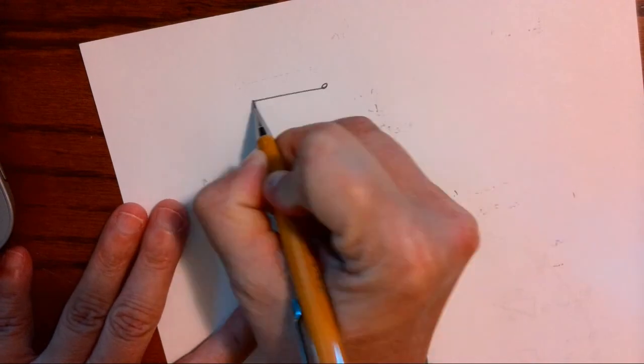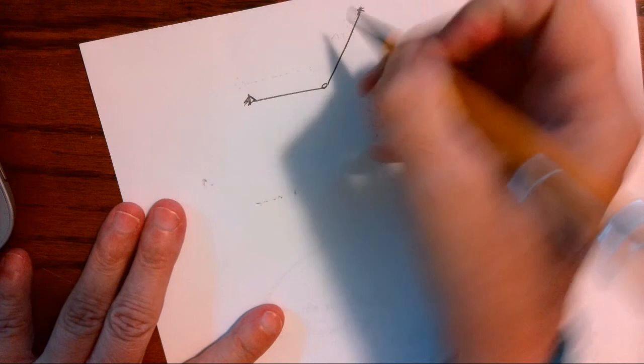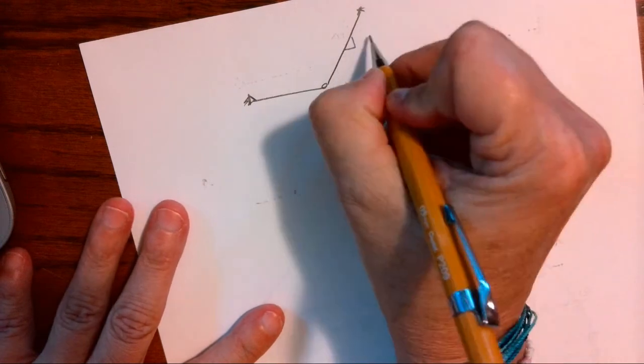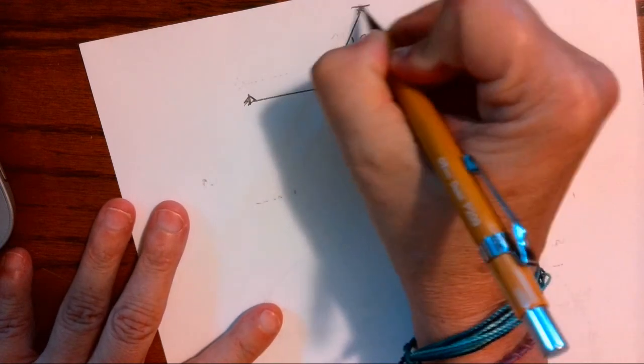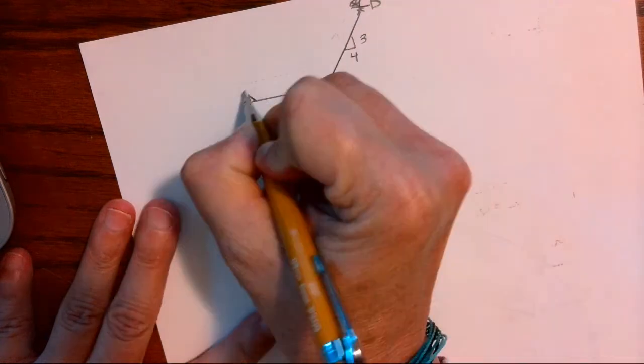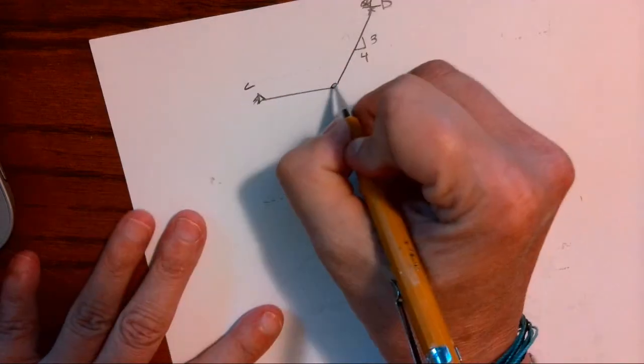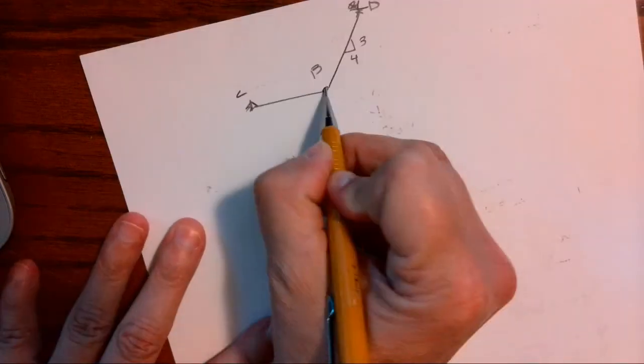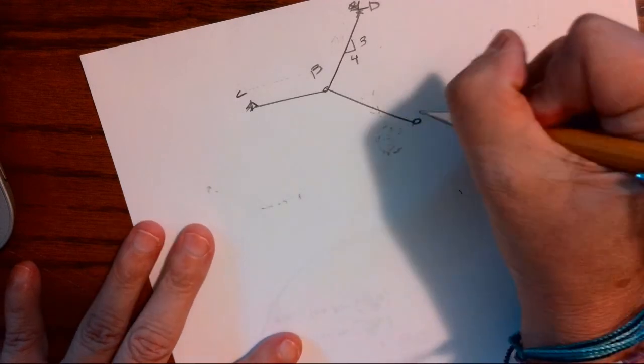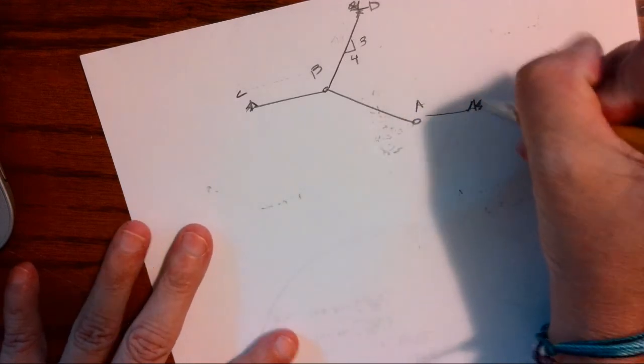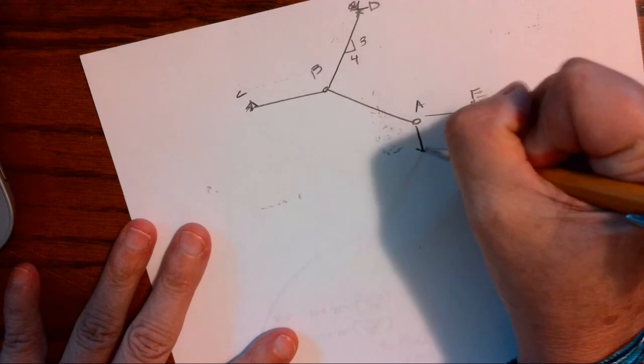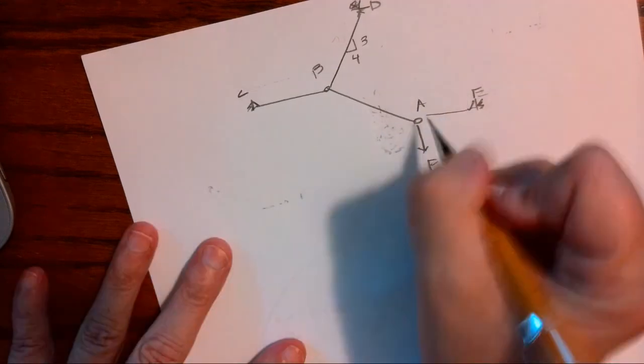We're just going to sketch this out really quickly. So we have a 3-4-5, this is attached to the ceiling at D, attached to the wall at C, this is B, just come down to A which is attached to the wall at E, and we have some unknown force.